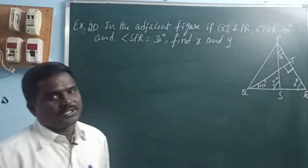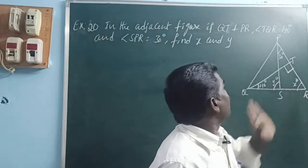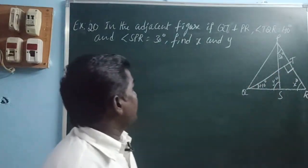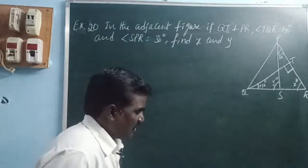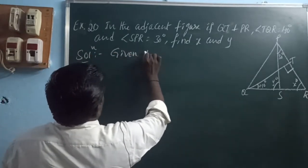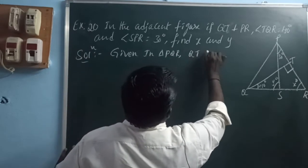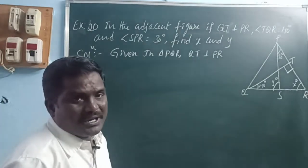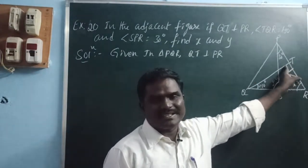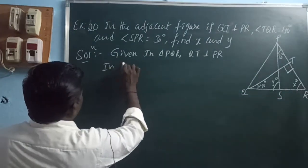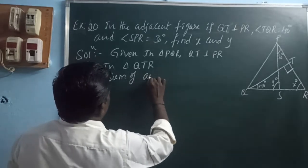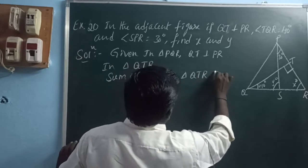Next, Example 20. In the adjacent figure, QT is perpendicular to PR, angle TQR is 40 degrees, and angle SPR is 30 degrees. Find X and Y. In triangle PQR, QT is perpendicular to PR, meaning the angle at T is 90 degrees. Using the sum of angles in triangle QTR equals 180 degrees.